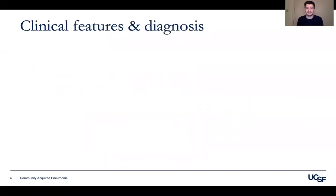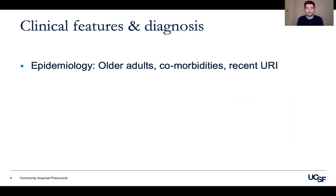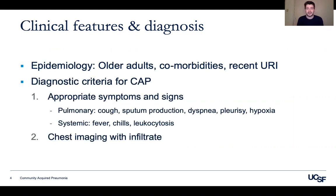We'll be focusing today on CAP, starting with its clinical features and diagnosis. CAP tends to affect older adults with multiple comorbidities, although it can affect younger persons with fewer comorbidities, and at times will follow a recent URI. The diagnostic criteria for CAP are appropriate symptoms and signs plus chest imaging revealing an infiltrate. Pulmonary symptoms include cough, sputum production, dyspnea, pleurisy, and hypoxia, while systemic symptoms include fever, chills, and leukocytosis.